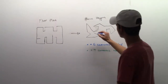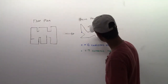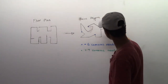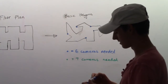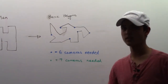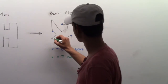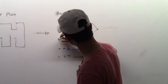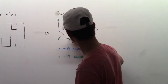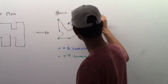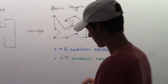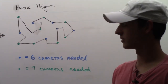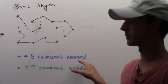The six camera placement would be one here, one here, one here, one here, one here, and one here. Seven would require placements here, here, here, here, here, here, and here. As you can see, both options — six or seven cameras — allow you to see all of the floor plan. However, with the six-camera option, we are using fewer cameras.